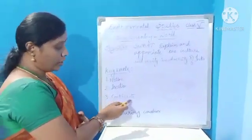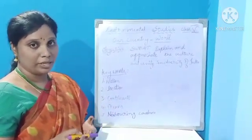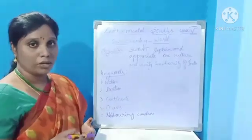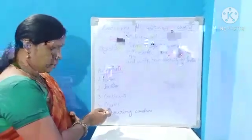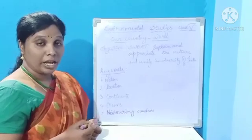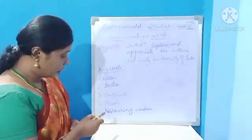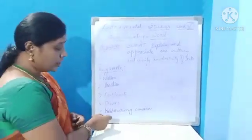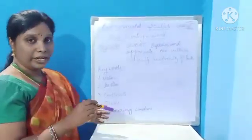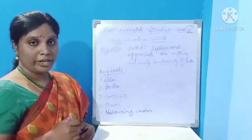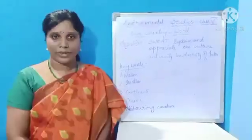Third keyword: Continents. Continents are the large land masses present on earth's surface. Next, oceans. Oceans are the large water bodies present on earth's surface. Last one, neighboring countries. Neighboring countries means the countries which are located near to a particular country.